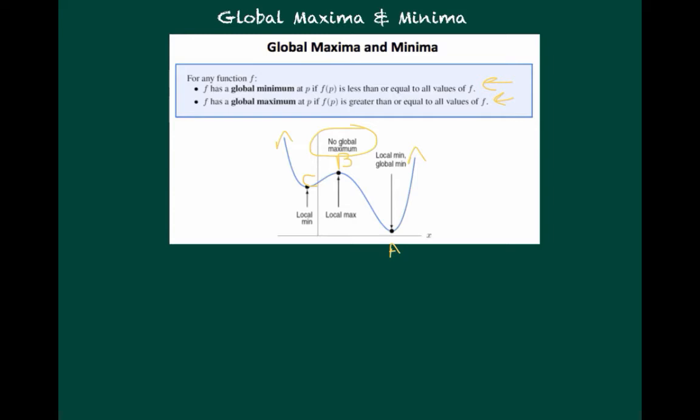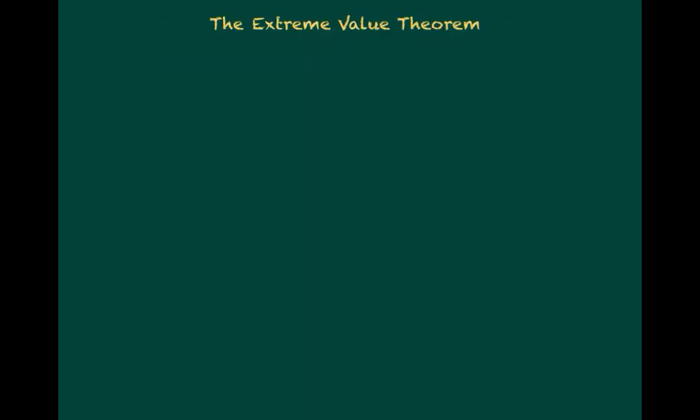There is only one global minimum and one global maximum for a function. Now, in that last example, we saw that there was no global maximum. And we can imagine other functions where there was no global maximum or global minimum. Just taking a look at any plain old cubic, that's going to increase to infinity as x goes to infinity and decrease to negative infinity as x goes to negative infinity. But there is a theorem that on a closed interval, you must have a global max and a global min. So let's take a look at that.